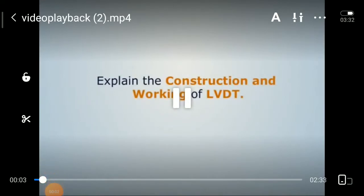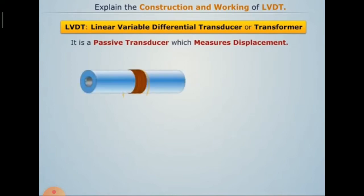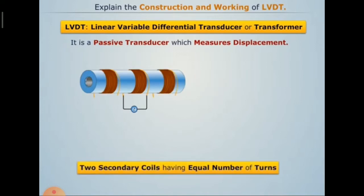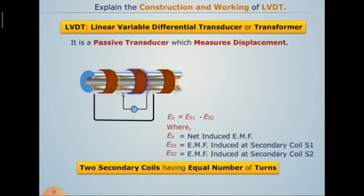Now let us discuss the working of LVDT. LVDT is a Linear Variable Differential Transducer or Transformer. It is a passive transducer which measures displacement. It consists of one hollow core on which a primary winding is wound and supplied with an AC source. There are two secondary coils having equal number of turns, connected in series opposition circuit. The output voltage is the difference ES1 minus ES2 — the EMFs induced by secondary coil 1 and secondary coil 2.